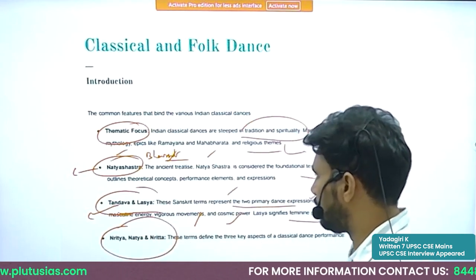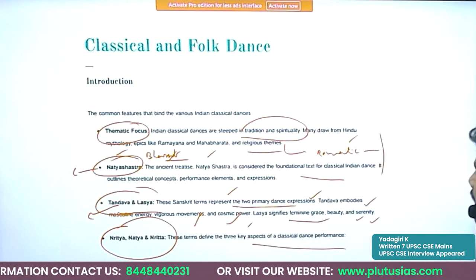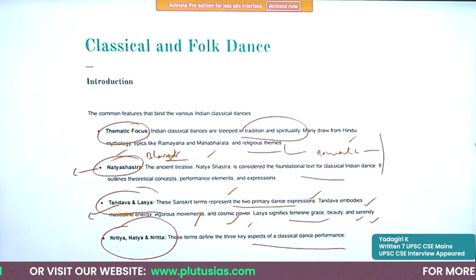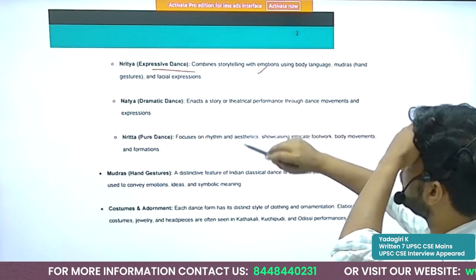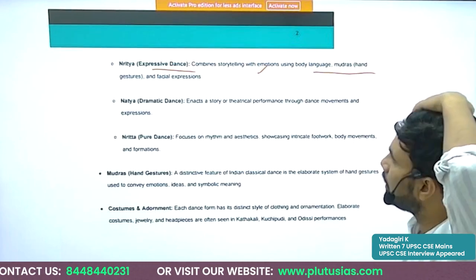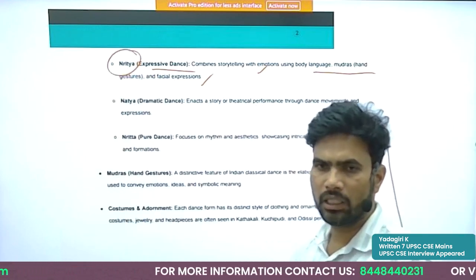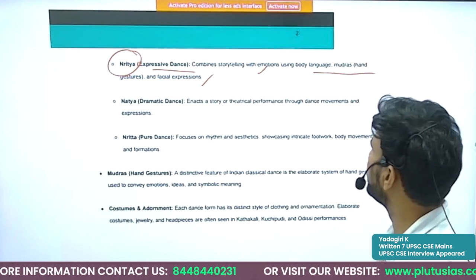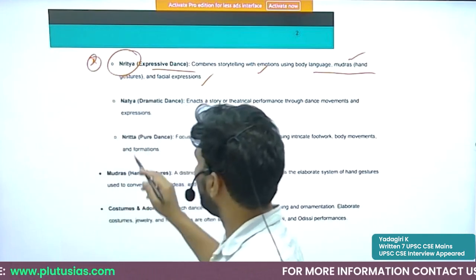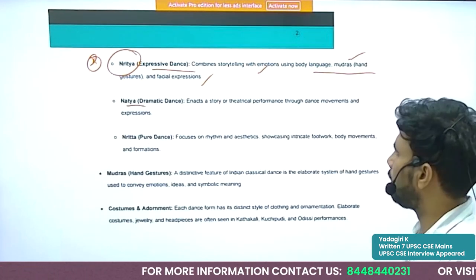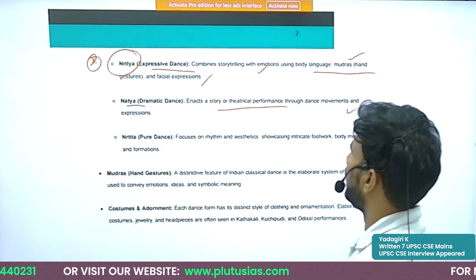Nritta, Natya, and Nritya are three key concepts in classical dance performance. Nritya is expressive dance — it combines storytelling with emotions using body language, mudras (hand gestures), and facial expressions. It is the highest form of dance with theme, story, expressions, and emotions. Natya is dramatic dance — it enacts a story or thematic performance through dance movements and expressions.